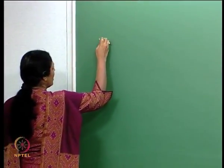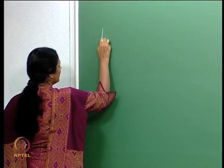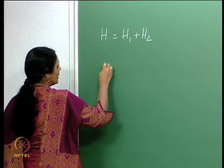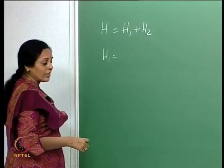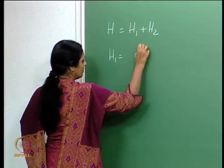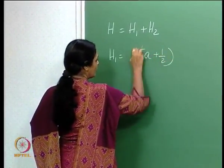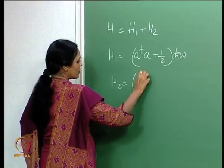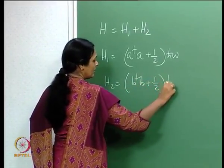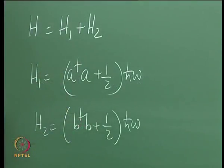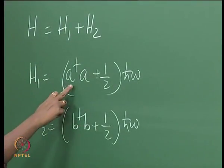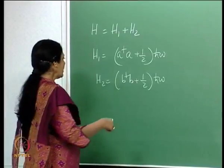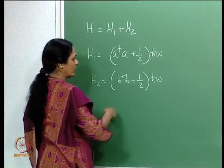The composite system has a Hamiltonian which is the sum of H₁ and H₂. I can write H₁ = (a†a + 1/2)ℏω and H₂ = (b†b + 1/2)ℏω. The number operator for the first oscillator is a†a and the number operator for the second is b†b.